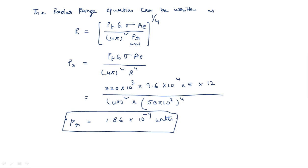In this way you can calculate any unknown value from the maximum radar range equation by taking the formula Rmax = [Pt·G·σ·Ae / (4π)²·Smin]^(1/4) and rearranging for whatever parameter is unknown. Thank you.